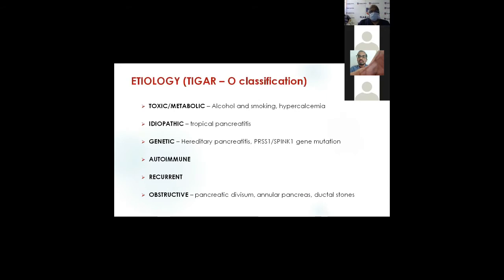The etiologies are classified under TIGORO: idiopathic — that's tropical pancreatitis; genetic — due to hereditary pancreatitis, PRSS1 or SPINK1 gene mutations; autoimmune pancreatitis. Importantly, autoimmune pancreatitis doesn't require any surgery. Simply put the patient on steroid therapy, the pain alleviates remarkably and even the gland function returns to normal. One distinguishing feature is the sausage-shaped pancreas on cross-sectional imaging. You must identify autoimmune pancreatitis — it's easily treatable and no surgery is required.